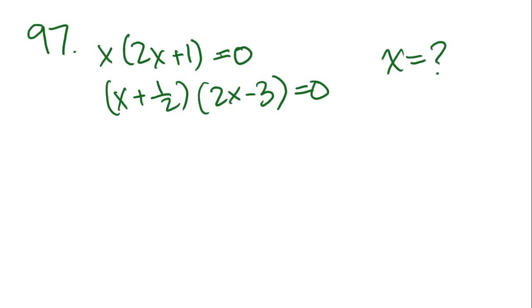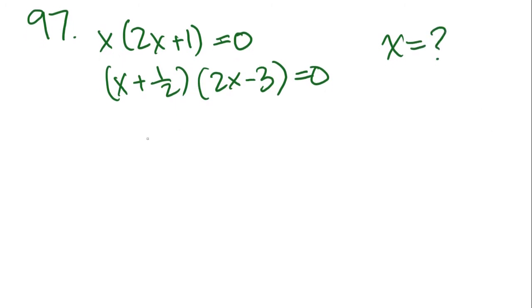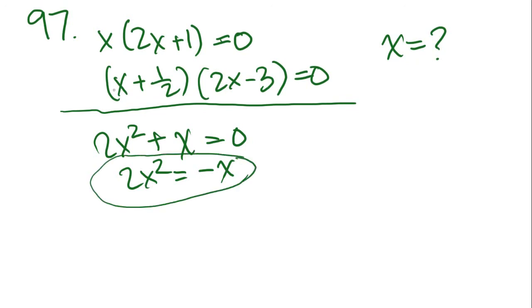Number 97. If x times (2x + 1) equals 0, and (x + 1/2) times (2x - 3) equals 0, then x is what? FOIL method. We're going to have to distribute and do the multiplication to get two completely new equations. Let's do that. x times 2x is 2x squared. x times 1 is x equals 0, so 2x squared equals negative x. And now for the second equation, let me circle this so we don't forget.